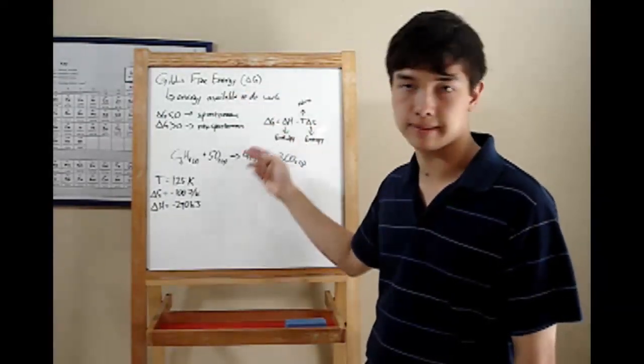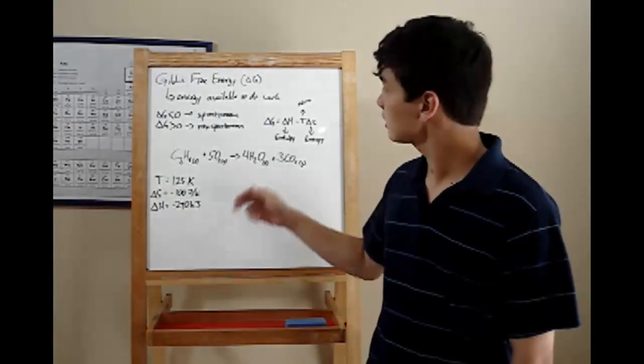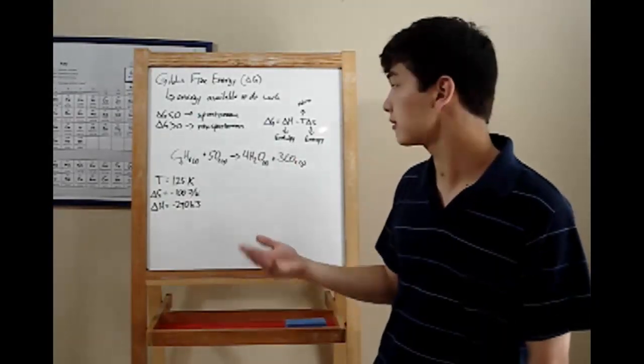Gibbs free energy, denoted by delta G, is the energy available to do work. This definition will come in handy more in higher level chemistry and physics.